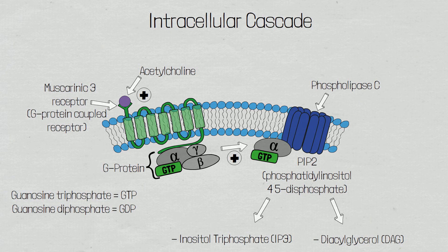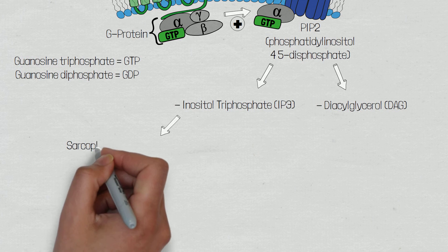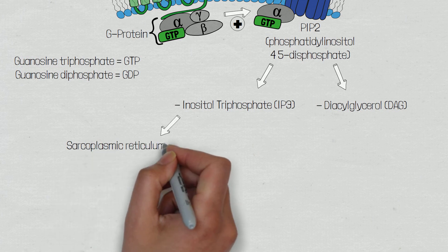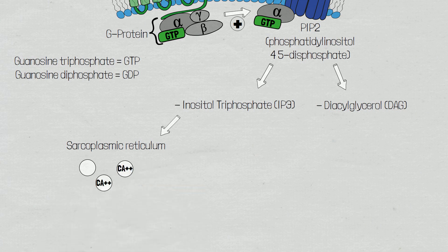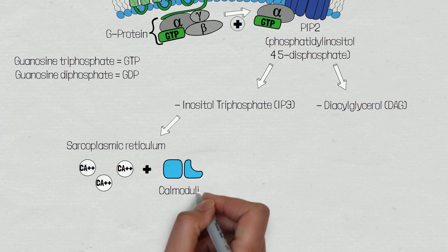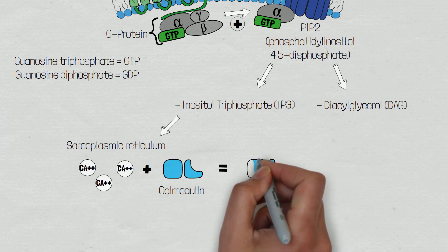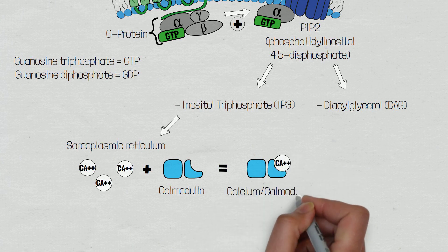Inositol triphosphate in turn triggers the release of calcium ions from the sarcoplasmic reticulum within the bronchial smooth muscle cell. This calcium will then bind with a protein called calmodulin and creates a calcium calmodulin kinase, and a kinase is an enzyme that wants to phosphorylate.